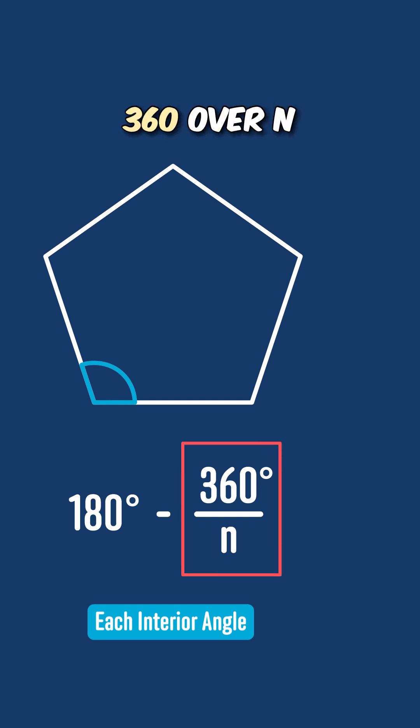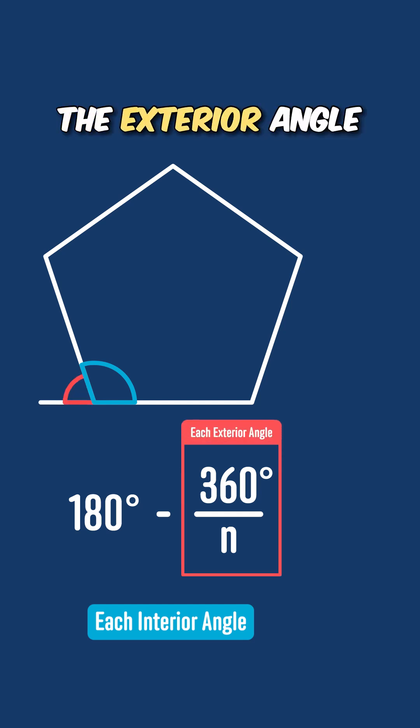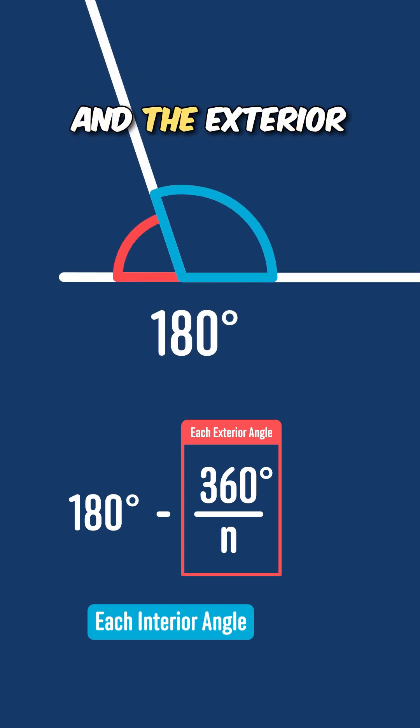But wait, 360 over n is exactly the exterior angle of the regular polygon. So our formula tells us that each interior angle equals 180 minus the exterior angle, and that makes perfect sense, because we already know that the interior and the exterior angles must add up to 180 degrees.